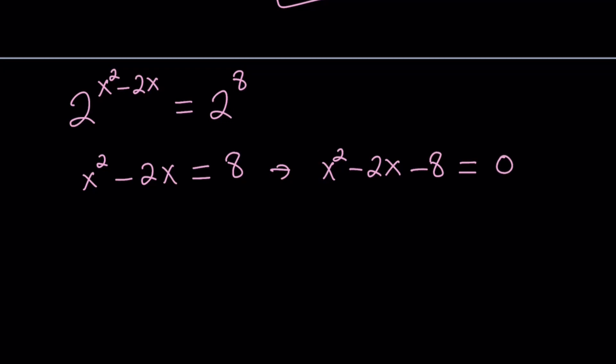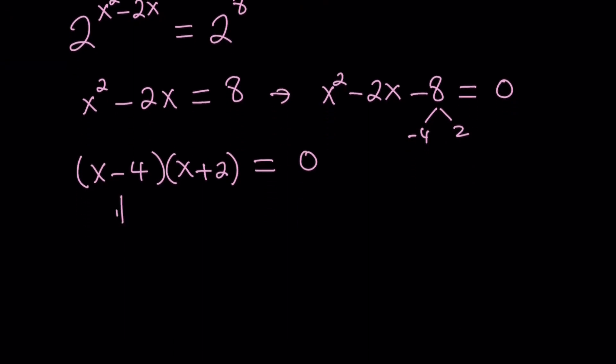Now this is factorable into two linear factors, negative 4 and 2 are two numbers we're looking for. And now we can write this as x minus 4 times x plus 2 equals 0. And from here, we get two solutions for x: x equals positive 4, and x equals negative 2.